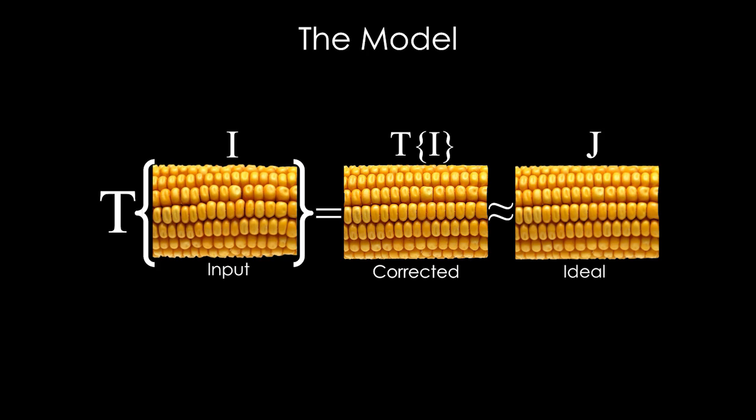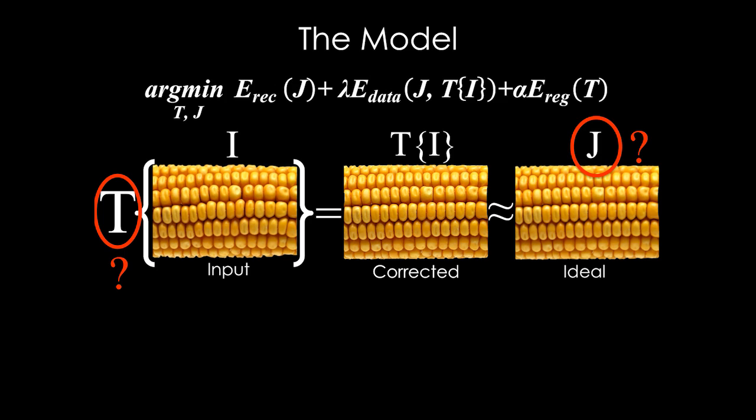However, we don't know the ideal image or the transformation, and we want to estimate them given only the input image. This is an ill-posed problem, and to solve it, we place a strong prior on j that lets us define the following objective function.